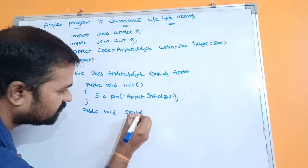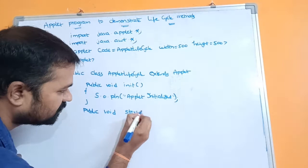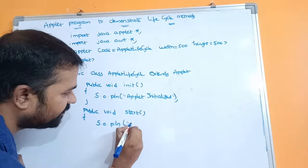Next let us write the second method. The second method is the start method: public void start(). Here also we display some message using System.out.println — for example, 'Applet started'.